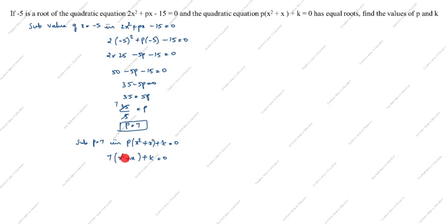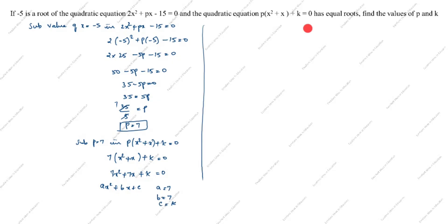Inside the bracket we multiply: 7x² + 7x + k = 0. Using the general form ax² + bx + c, we identify a = 7, b = 7, and c = k.